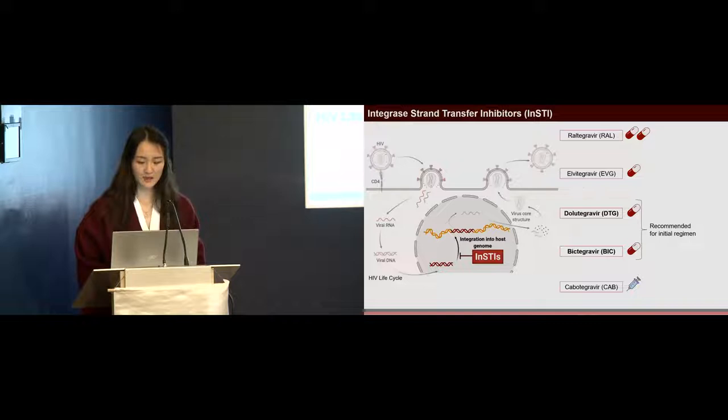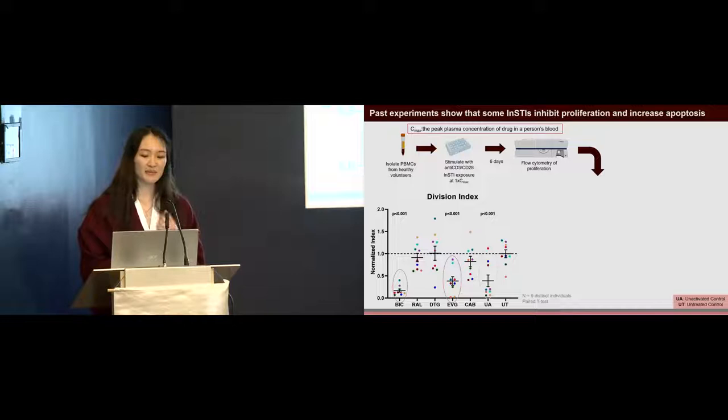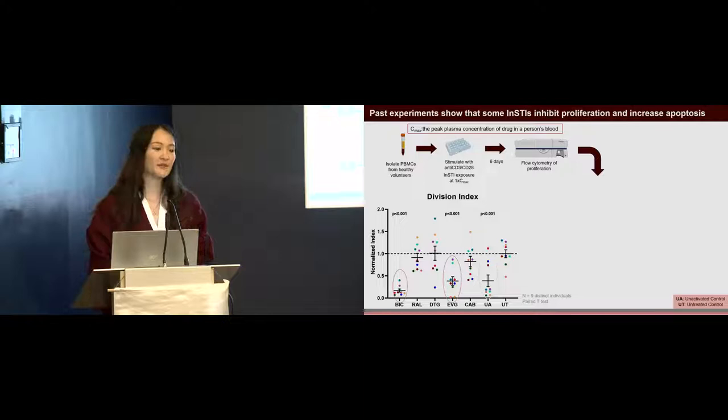Past experiments in the lab have showed that some INSTIs inhibit proliferation and increase apoptosis. To do these experiments, we isolated PBMCs, peripheral blood mononuclear cells, from nine healthy individuals. We then plated them and exposed them to the five INSTIs at 1x Cmax, which is the peak plasma concentration in a person's blood. We then stimulated them with anti-CD3, CD28 to proliferate the T cells. We waited for six days and then did flow cytometry.